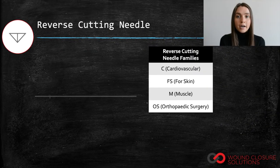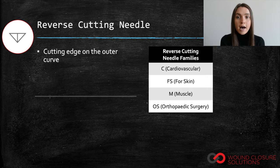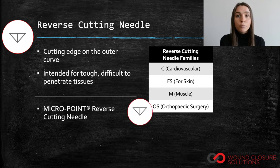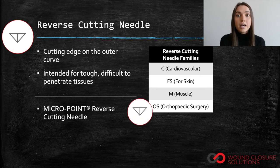Reverse cutting needles have the cutting edge on the outer curve, whereas conventional cutting needles have a cutting edge on the inside curve, as previously mentioned. These needles are intended for tough, difficult to penetrate tissues. Two reverse cutting needle subtypes include reverse cutting micro point surgical needles and precision point reverse cutting prime needles.